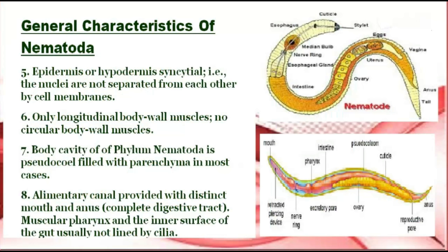Next is the epidermis, or hypodermis. The nuclei are not separated from each other by cell membranes. There are only longitudinal body wall muscles and no circular body wall muscles. The body cavity of phylum Nematoda is filled with fluid in most cases. The alimentary canal is provided with a distinct mouth and anus, forming a complete digestive tract, with a muscular pharynx; the inner surface of the gut is usually not lined by cilia.